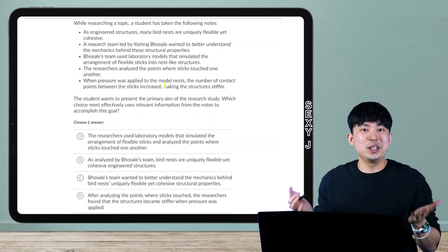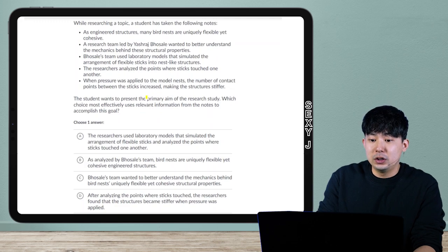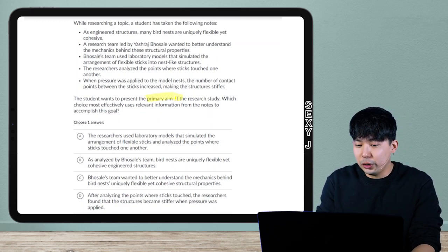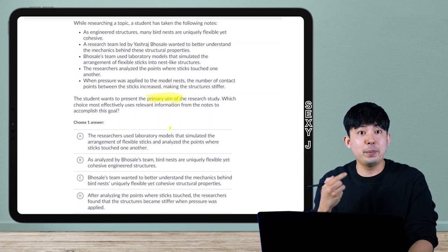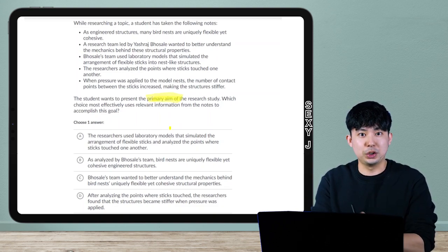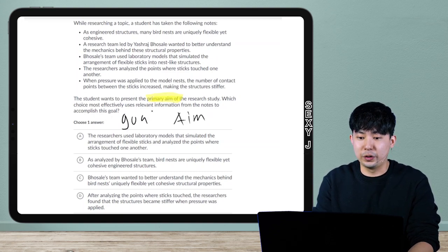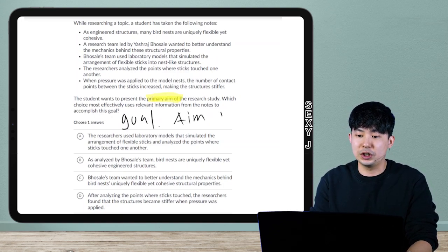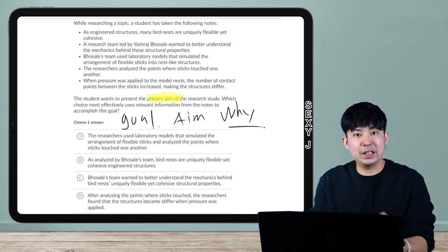That's good news. That means you guys don't really have to read. So look at this example here. This is very common. We just want to isolate what are we being asked for. The student wants to present the primary aim of the research study. So we're going to go through multiple categories of the rhetorical synthesis. And this one is aim.